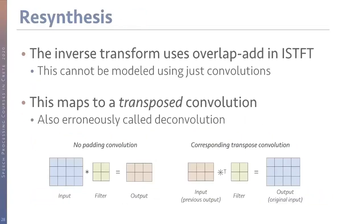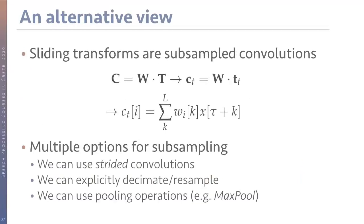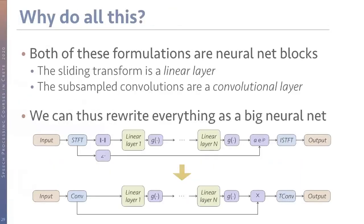Question: is C a complex number? Answer: yes, right now it's a complex number. Both the matrix multiplication and convolutional layer formulations are neural net blocks, which means we can rewrite the entire denoising process as one big neural network. What we had before: input → STFT → magnitude + phase → sequence of neural network layers → new magnitude → combine with phase → inverse STFT → output.